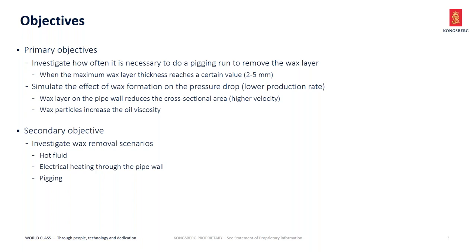We do not intend to let the entire pipe be plugged by wax. We would like to see the effect of wax formation on pressure drop — even a few millimeters of wax deposit can lower the production rate because the cross-sectional area of the pipe gets reduced, giving higher velocities. Secondly, wax particles increase the oil viscosity, which may also increase the pressure drop through the pipe. Lower production rates means less money, of course.